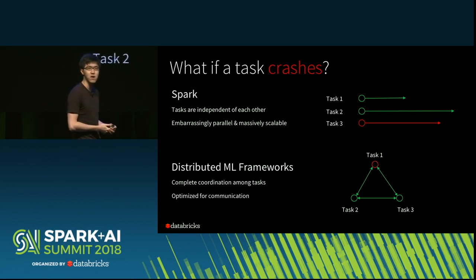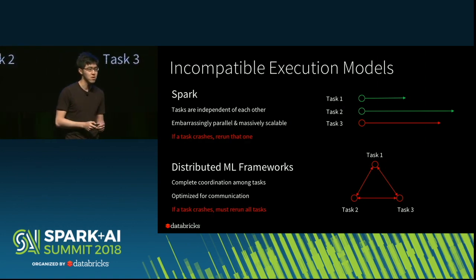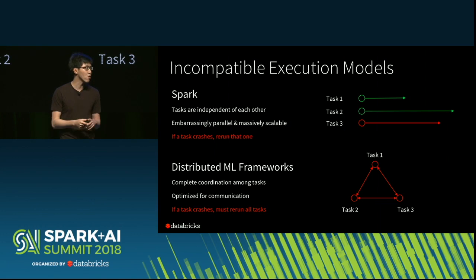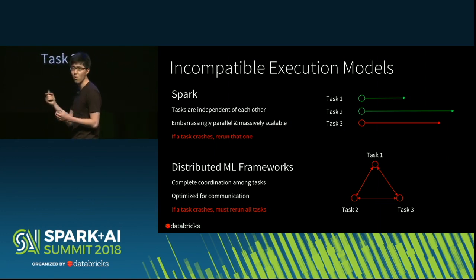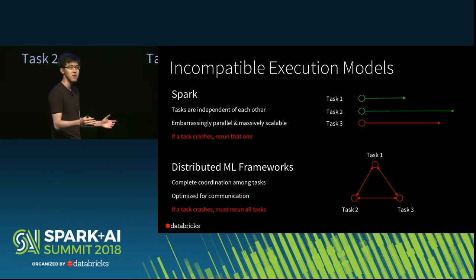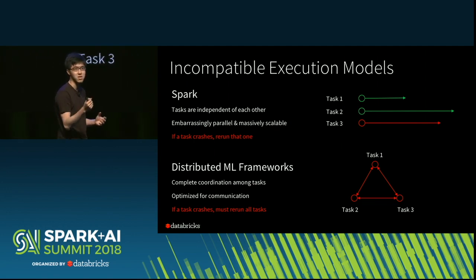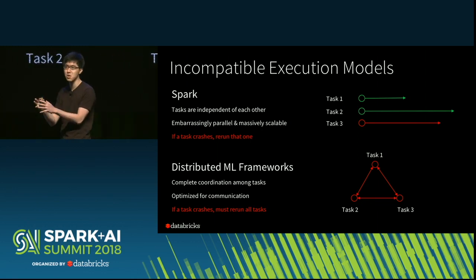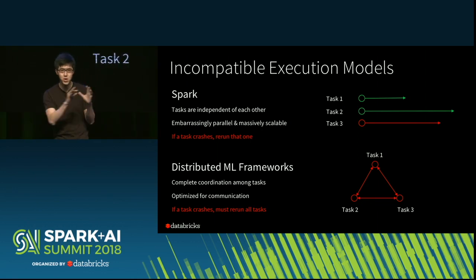What happens if one of the tasks fails? In Spark's model, if a task fails, because the tasks are independent, we just need to relaunch that one task — that's enough for full recovery. But in the case of distributed machine learning frameworks, if one task fails due to complete dependency, all the tasks need to be relaunched. And if only a subset of tasks gets launched, that task will actually wait for all the others and hang. So there's a fundamental incompatibility between the way Spark scheduling works and all of these distributed machine learning frameworks.